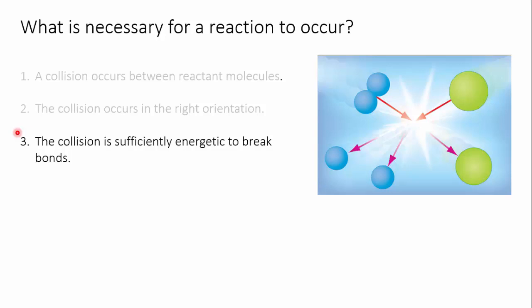Two molecules approaching one another may have everything going for them but if they're moving too slowly all that will happen is they'll gently bounce off each other and continue on their way. So the last requirement is that the molecules be moving fast enough or in other words have sufficient kinetic energy for the collision to break some bonds and cause a reaction.